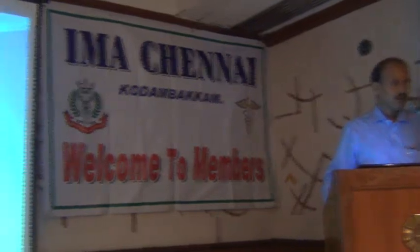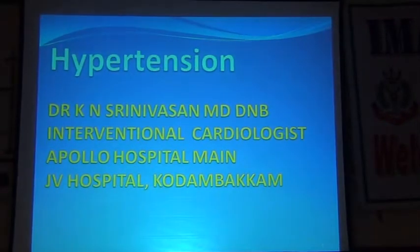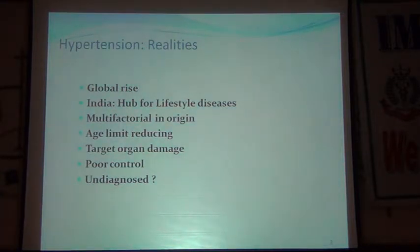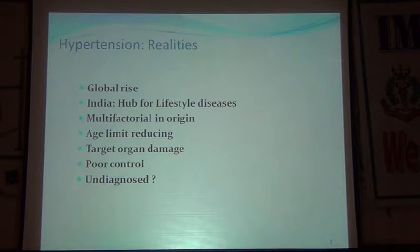There is a global rise in hypertension — in India both increases in population and lifestyle diseases are contributing. Next to diabetes, hypertension is rising. It is a multifactorial disease and the age limit is coming down. What we thought was an elderly disease, we now see hypertension occurring in younger age groups. When hypertension occurs early, the duration increases because survival is increasing, so target organ damage is also increasing.